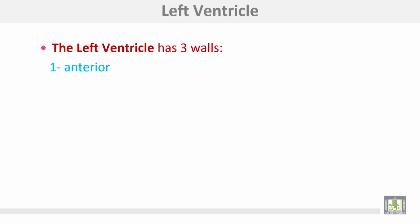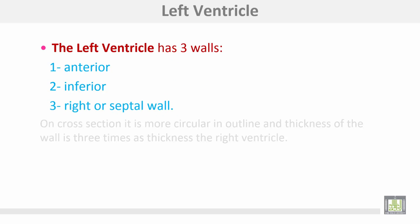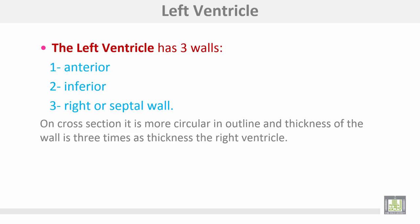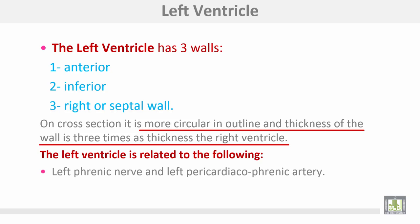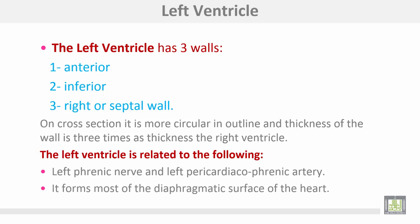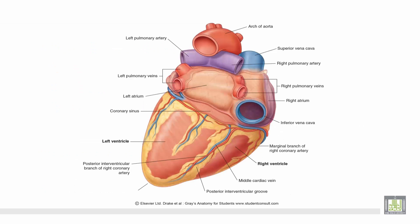The left ventricle also has three walls: anterior, inferior, and right or septal wall. On cross-section, the left ventricle is more circular in outline, and the thickness of its wall is three times the thickness of the right ventricle. The left ventricle is related to the left phrenic nerve and the left pericardiacophrenic artery. It forms most of the diaphragmatic surface of the heart.